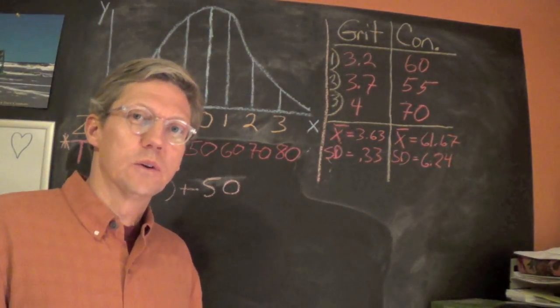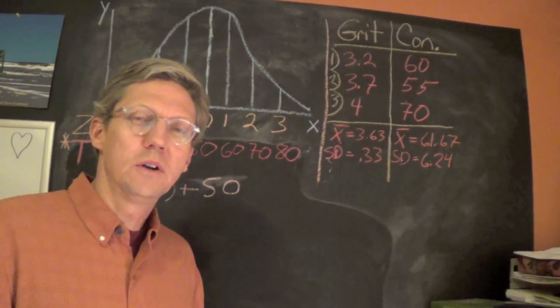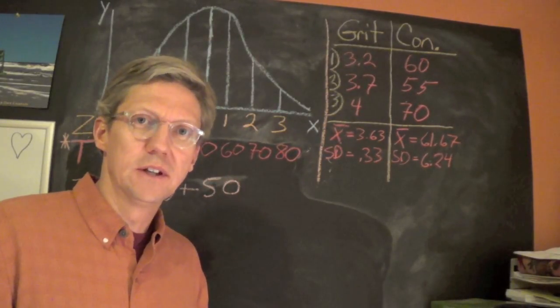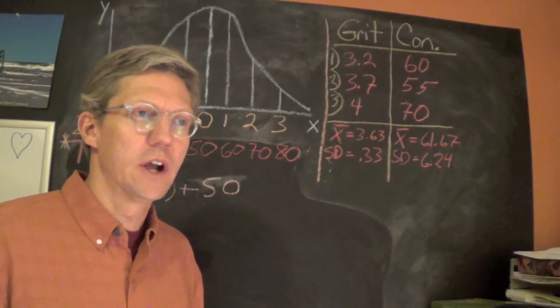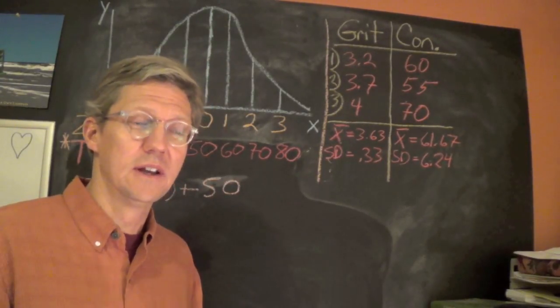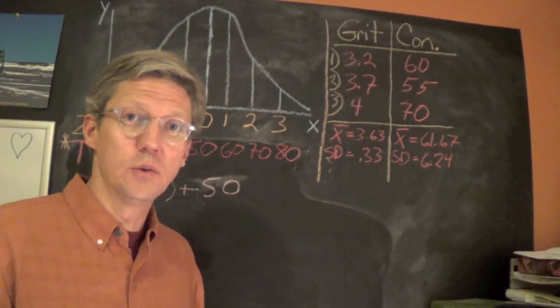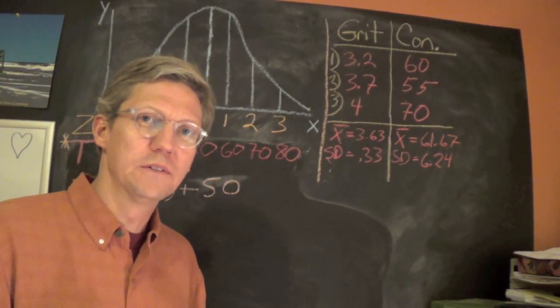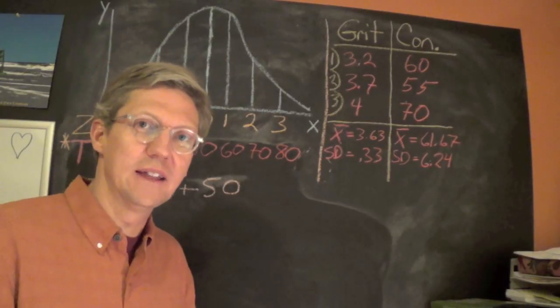Now we're going to look at T-score, another standardized score and really the most common one that you see in the literature. Many of the creators of tests calibrate their tests to the T-score. So if you're looking at a test manual, a lot of times the scores are already calibrated towards the T-score and we'll just see how to calculate that.